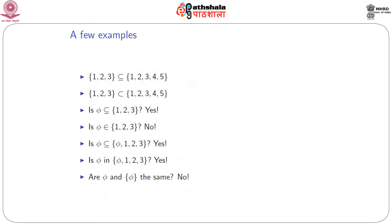Consider two sets: the first set consists of {1, 2, 3} and the second set consists of {1, 2, 3, 4, 5}. If the question is asked whether the first set is a subset of the second set, the answer is yes, because every element in {1, 2, 3} belongs to the set {1, 2, 3, 4, 5}. And we can see that it is a proper subset, because the second set has two extra elements — 4 and 5 — which do not belong to the first set. So the left-hand set is a proper subset of the right-hand set.